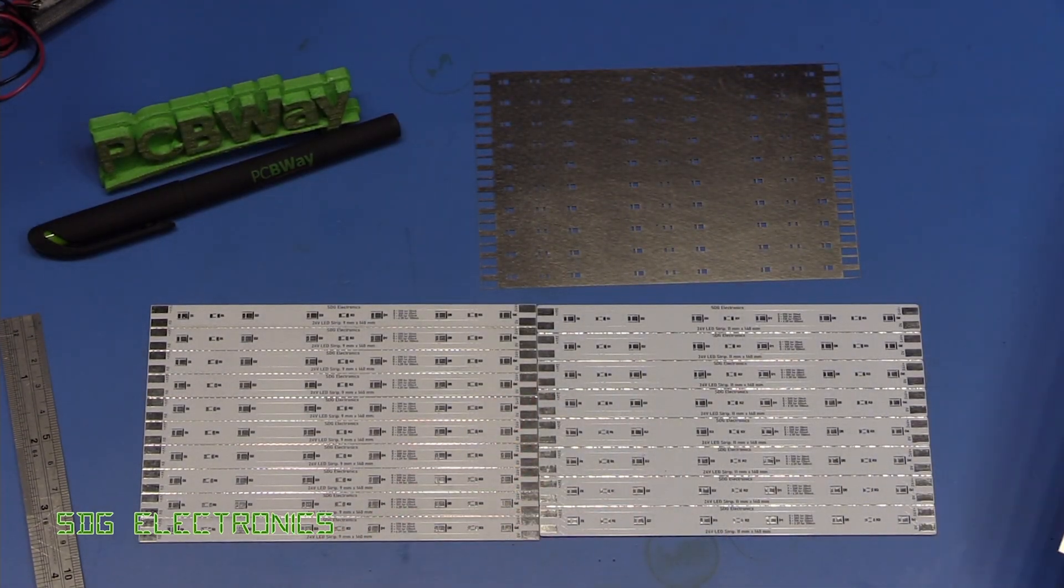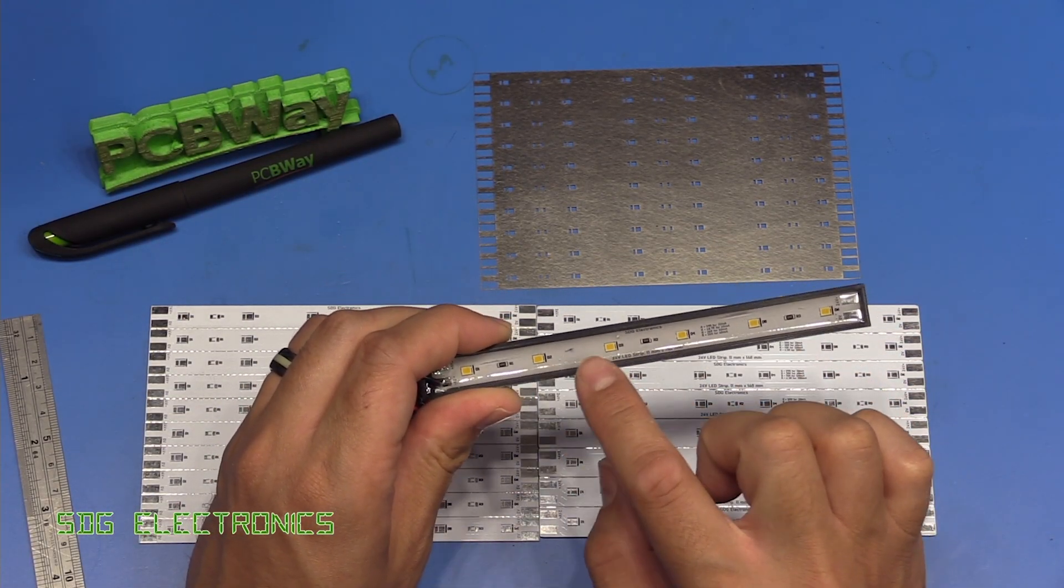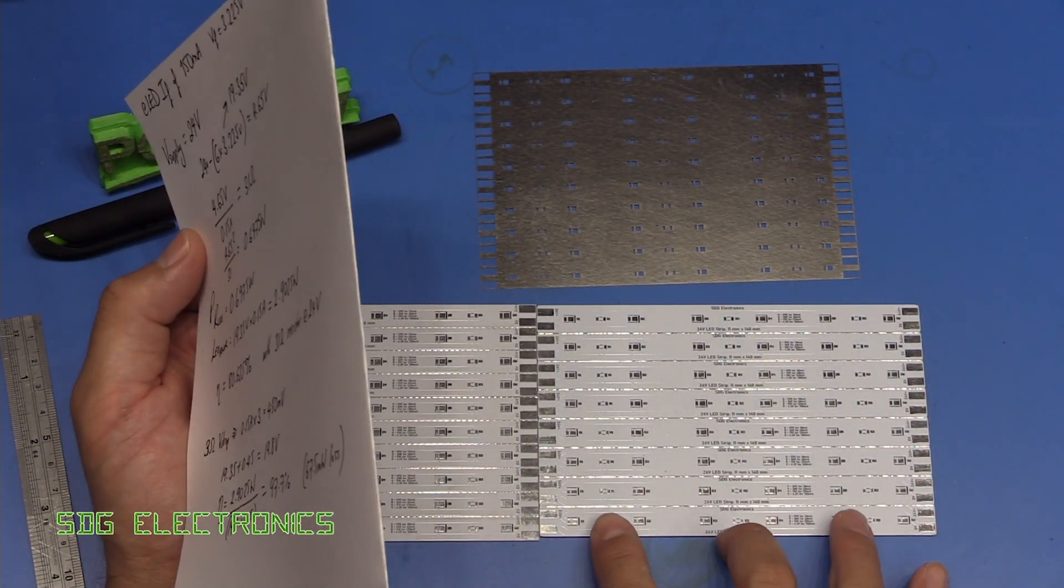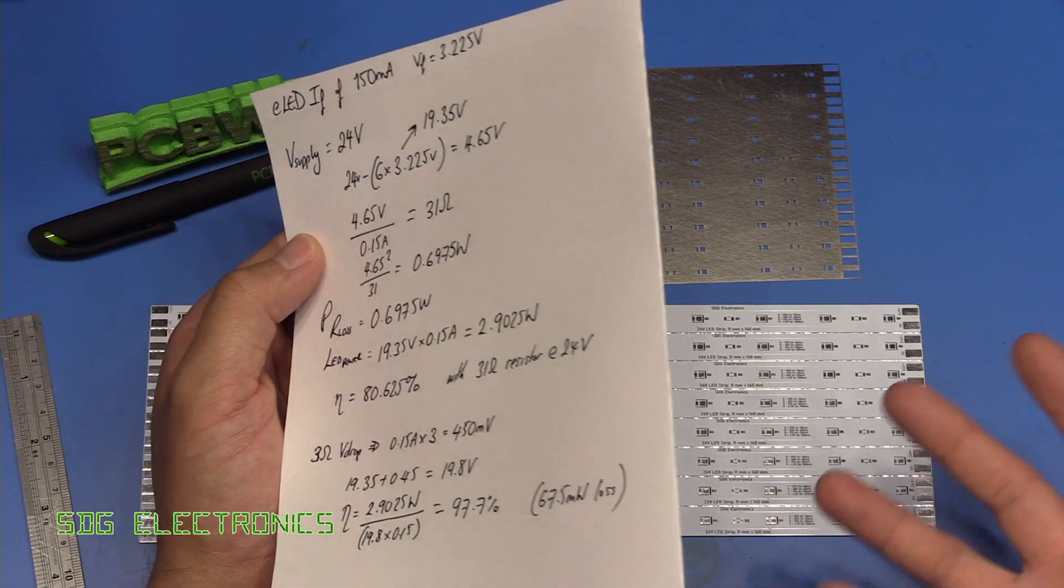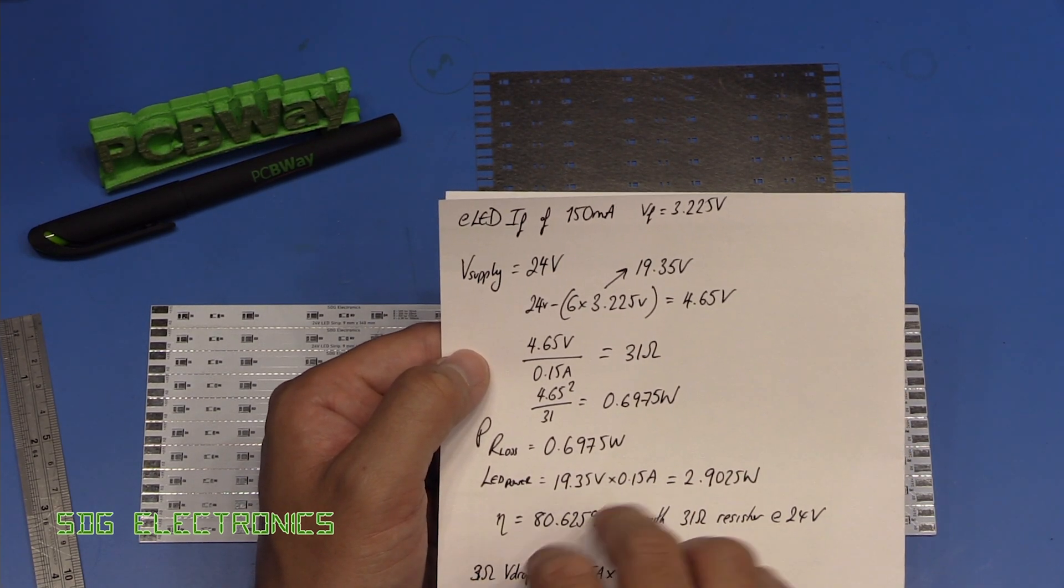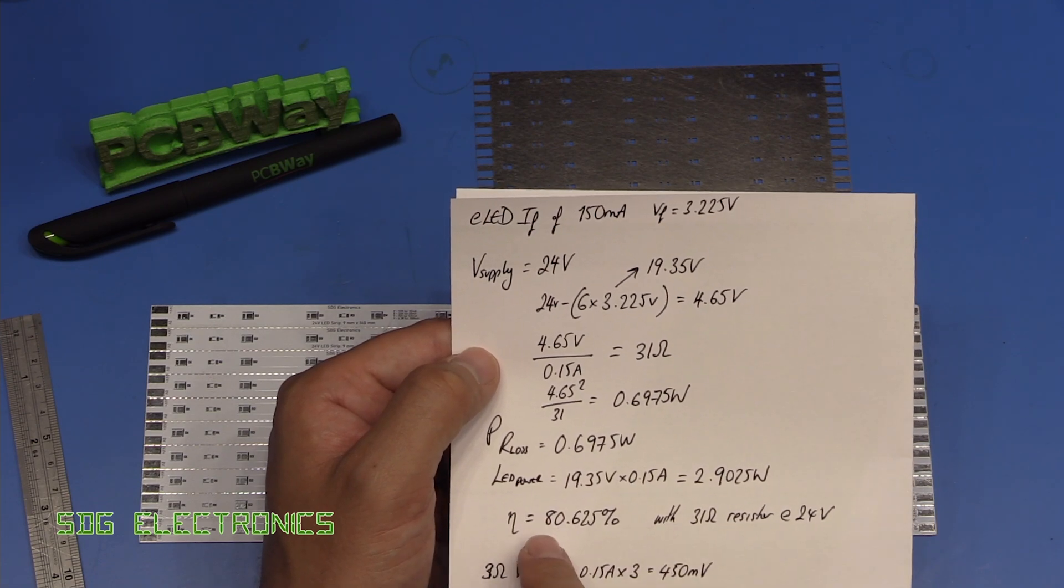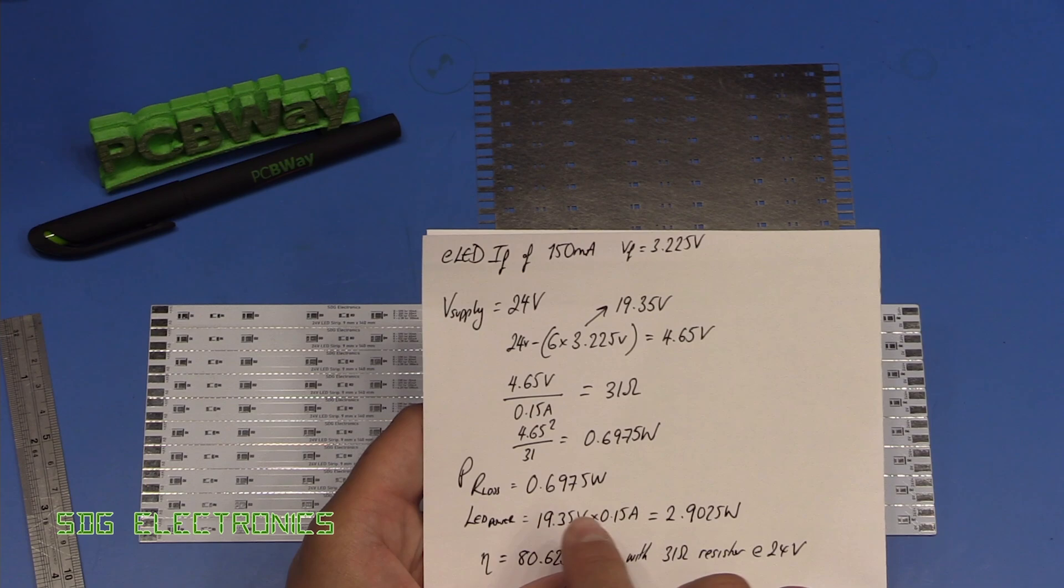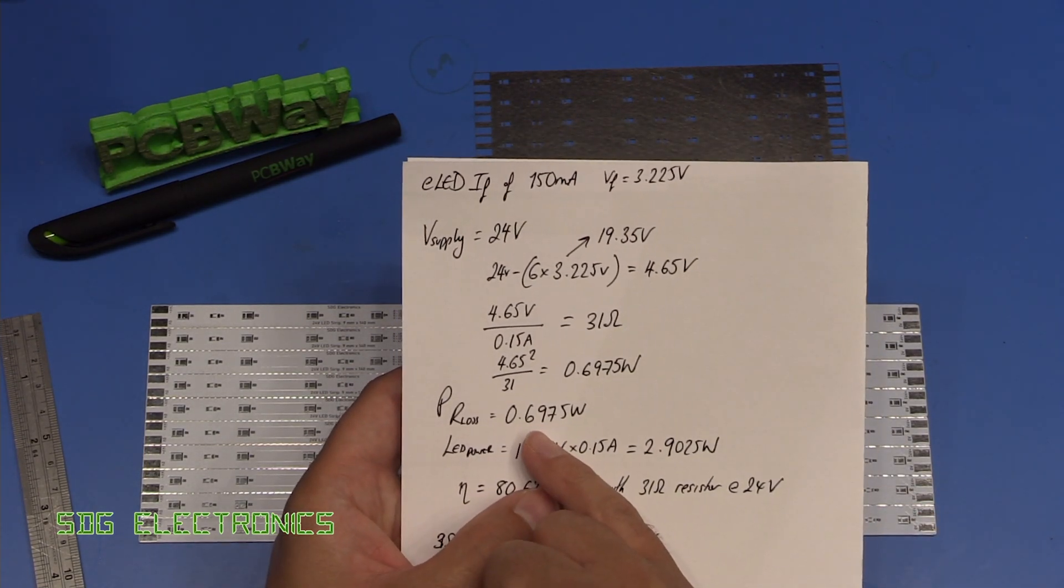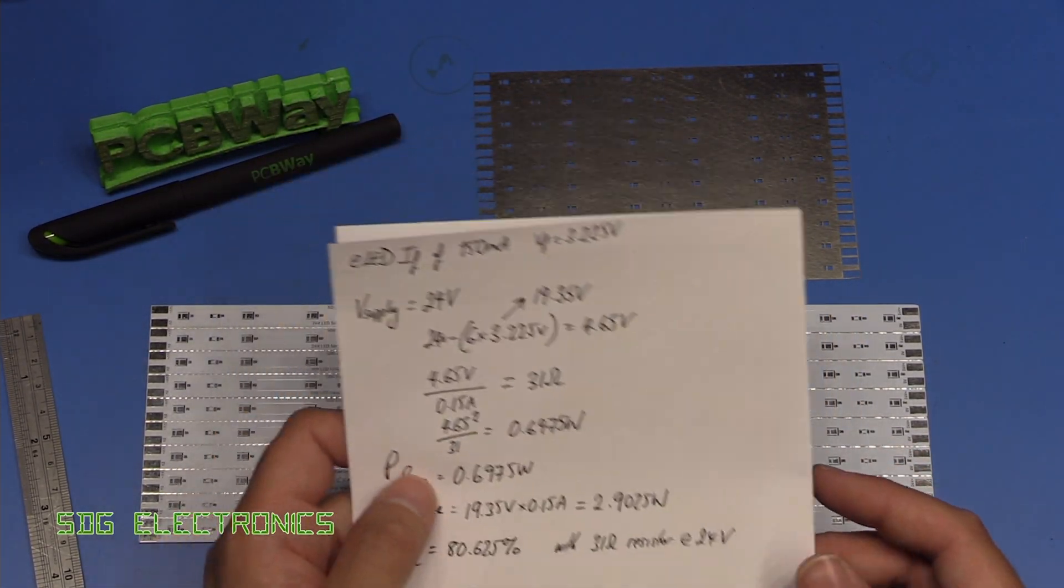So these are going to be assembled onto the PCBs and you'll see we've also got space for resistors. One thing I did find with this design when I was testing it at those higher currents is these resistors do get quite hot. I'm intending to run each of these LED strips from a nominal 24 volt supply and that means that we would need three 10 ohm resistors each. All three of them together would dissipate 0.7 watts, giving an efficiency of 80% per LED board.